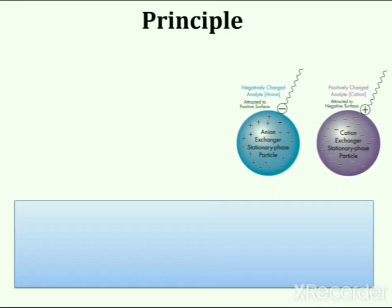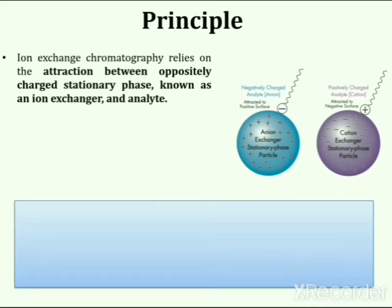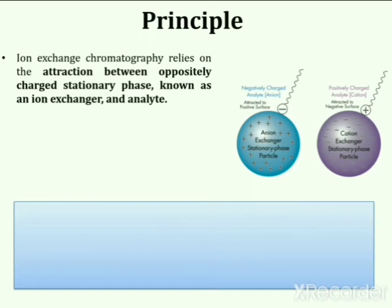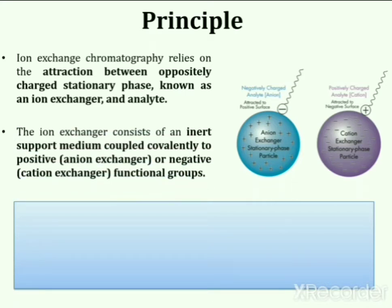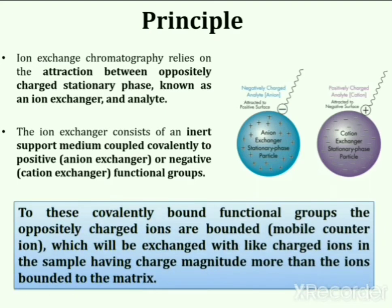Ion exchange chromatography relies on the attraction between an oppositely charged stationary phase — known as an ion exchanger — and the analyte. The analyte is a substance whose chemical constituents are being identified and measured. The ion exchanger consists of an inert support medium coupled covalently to positive (anion exchanger) or negative (cation exchanger) functional groups. To these covalently bonded functional groups, oppositely charged ions are bonded, which will be exchanged with like-charged ions in the sample having a greater charge magnitude than the ions bonded to the matrix.